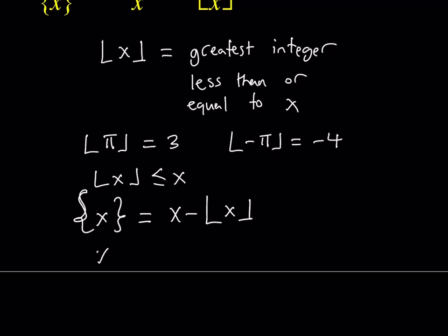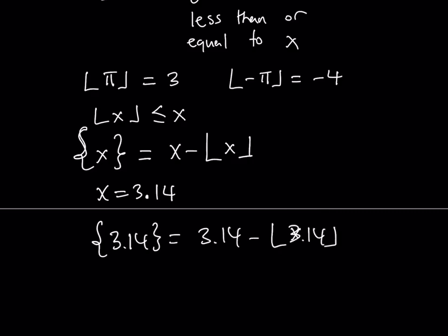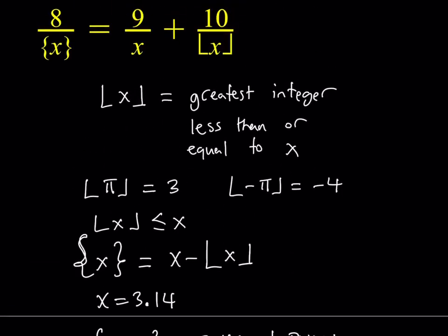For example, suppose x is equal to 3.14 — this is obviously not exactly pi, just an approximation. The fractional part of 3.14 is going to equal 3.14 minus the floor value of 3.14, which is 3, giving us 0.14. That's basically how we define the fractional part of x.